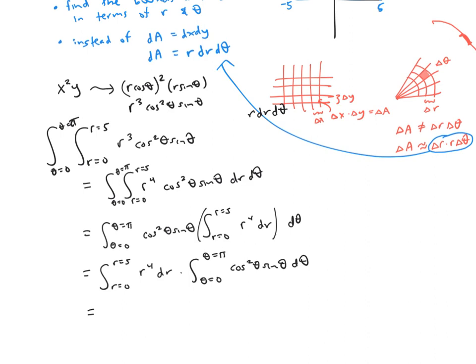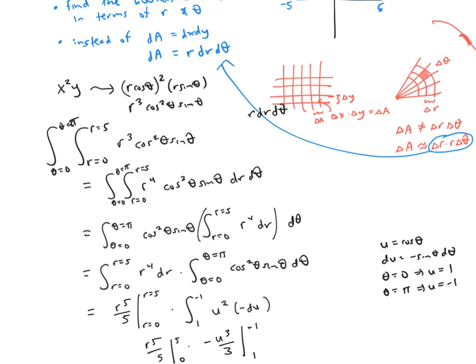To compute the integral of r to the fourth dr, I just get r to the fifth over five. And I can compute the integral of cosine squared theta sine theta dθ by doing a u substitution. I'll let u be cosine theta. So du is negative sine theta dθ. And I'll go ahead and convert the bounds of integration as well. So when theta is zero, u is going to be one and when theta is pi, u is going to be negative one. So I'll rewrite the integral. And I'll integrate to get negative u cubed over three, evaluated between negative one and one times the rest of my problem. After some arithmetic, this works out to 1250 over three.